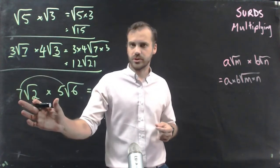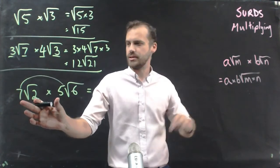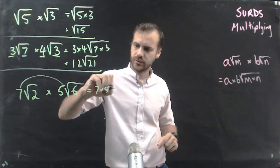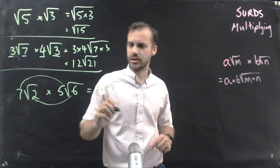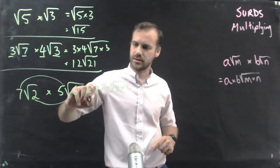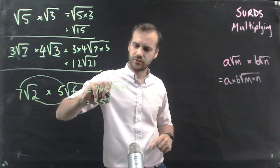Whatever's on the outside we multiply together. A and b, 7 times 5. Whatever's on the inside we multiply together. 2 times 6. That's going to be 35 root 12.